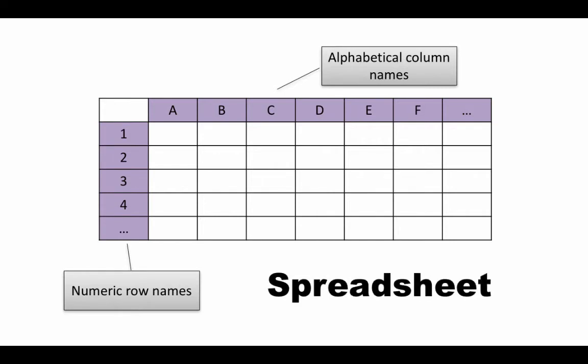You've got alphabetical column names, you've got numeric row numbers, and at the intersection of each column and row is a cell. In essence that's all there is to a spreadsheet, and there are a few more principles that you need to understand and you'll be up and running pretty quickly.